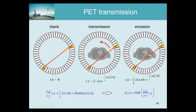We do the same scan, and now we measure fewer photons, because many of the photons that would be measured are now attenuated by the patient. Without the patient, we would measure the same blank scan, and with the patient, the blank scan is attenuated by the total attenuation along the LOR.